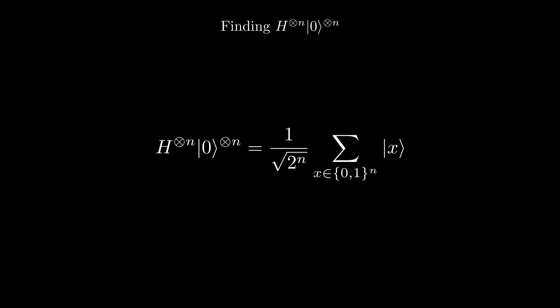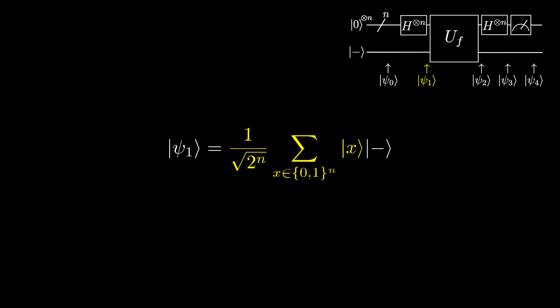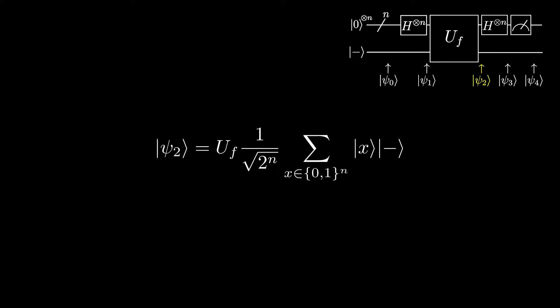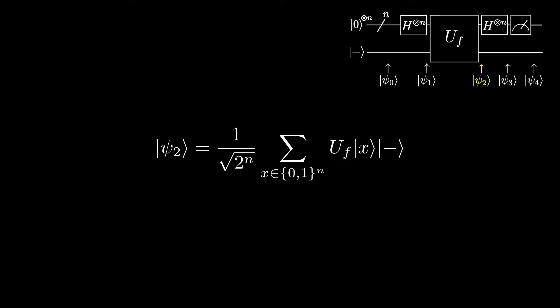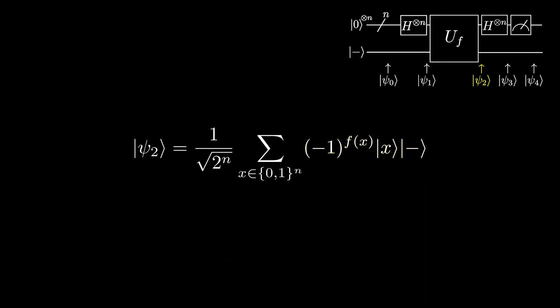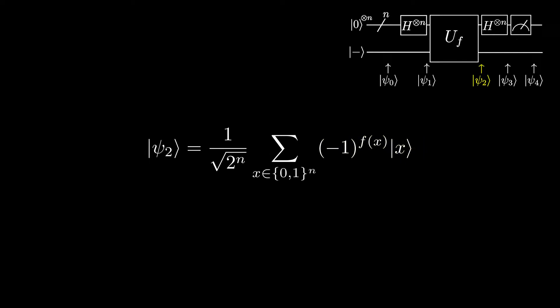Going back to ψ₁, we can now substitute this identity. At ψ₂, we apply the oracle function. Since the function acts on each of the superposition states, we distribute it into the sum. Each state in the sum is in phase oracle form, and applying the function gives us (1/√2)^n times the sum over all bit strings of length n of (-1)^f(x)|x⟩|−⟩. We omit the minus qubit from the equation as it is not needed in the algorithm anymore.